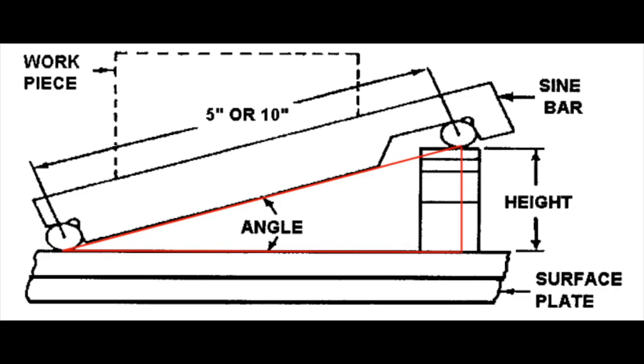To better understand the sine plate calculation let's draw a right triangle on our sine plate diagram. Next let's label the known angles of our triangle along with the hypotenuse, the opposite, and the adjacent sides.